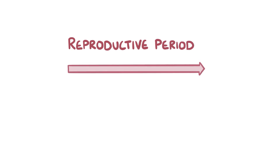In females, the reproductive period or fertility period refers to the years of monthly menstrual cycles between the first menstrual period, which happens at puberty, and then the permanent stopping of menstrual cycles, which is called menopause.